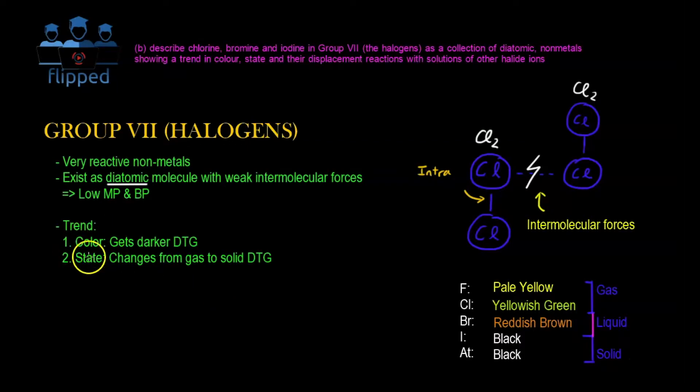You can see that in terms of color, it gets darker. I cannot draw in black because you cannot see the color, so I just wrote it in white. But you can imagine that from fluorine to astatine, it becomes darker. And from fluorine to astatine, it changes from gas to solid phase. That's what we mean by the trend.